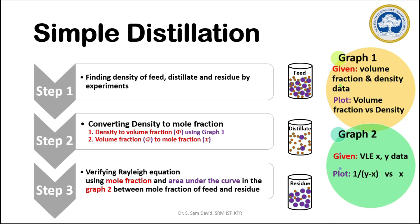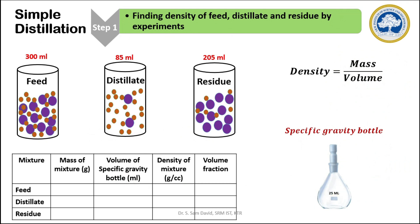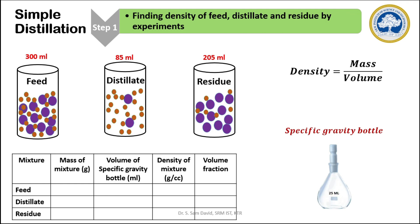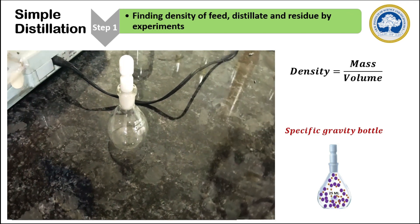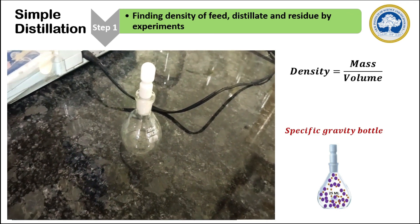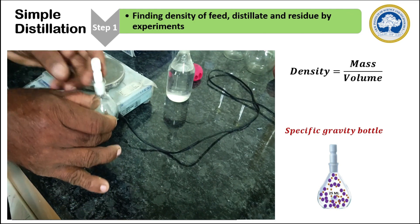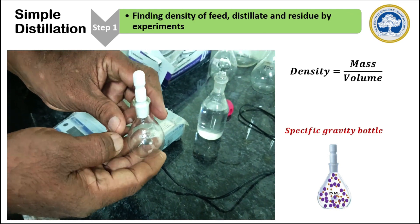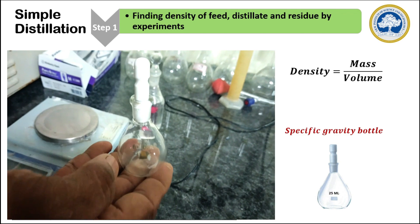We have three solutions and two graphs. In this experiment, we have collected 85 ml of distillate, 300 ml of acetone-water feed mixture, and the residue remaining in the round bottom flask is 205 ml. The first step is to find the density of the mixtures — that is feed, distillate, and residue. To find the density of the solution, we are going to use a specific gravity bottle. A specific gravity bottle of 25 ml is used in the study. The feed mixture will be filled in the specific gravity bottle, and when the Teflon lid is used to close it, it will squeeze out the excess solution.